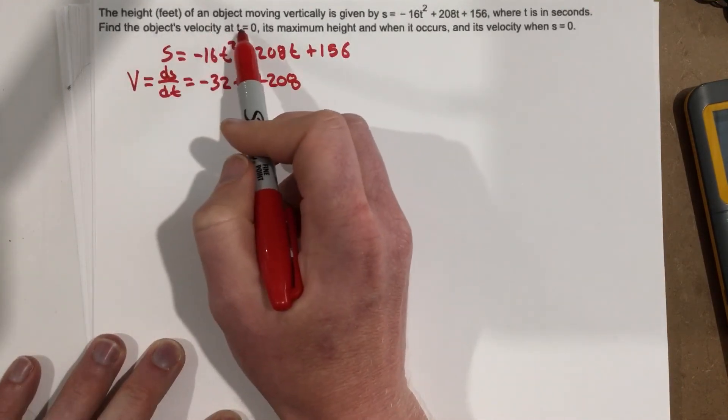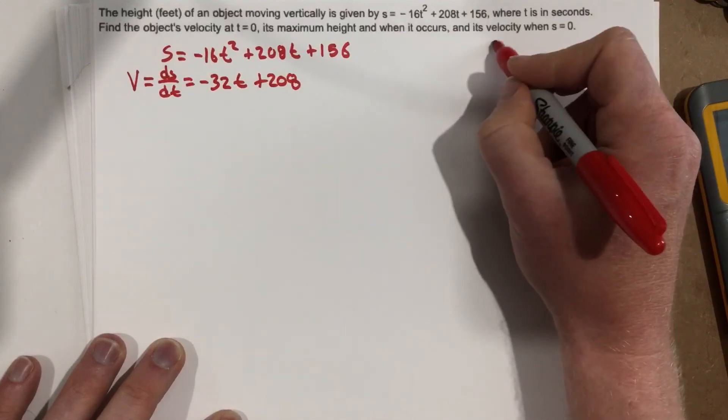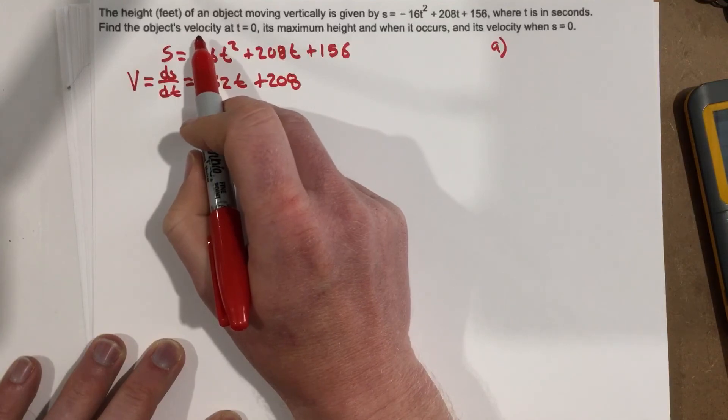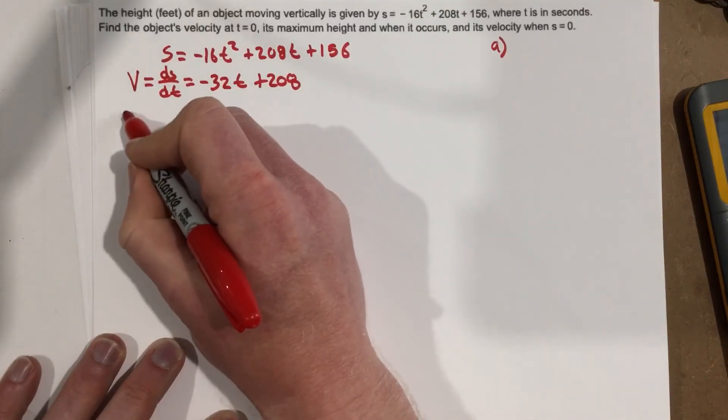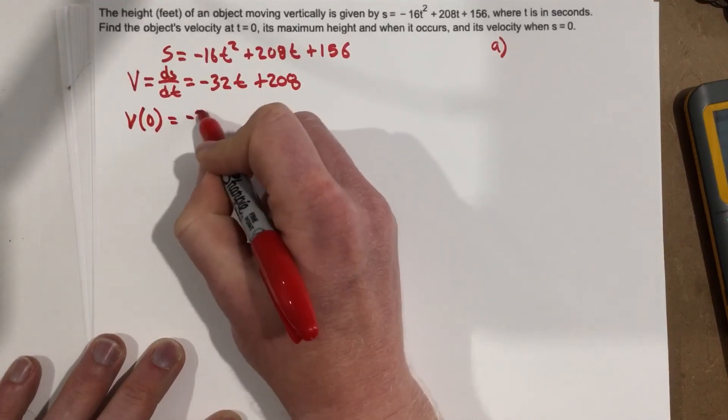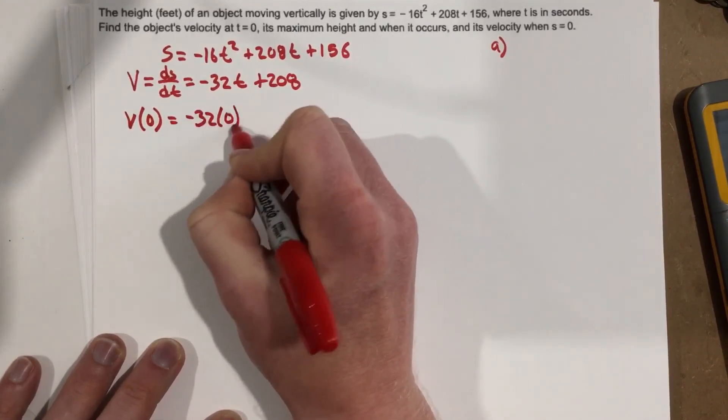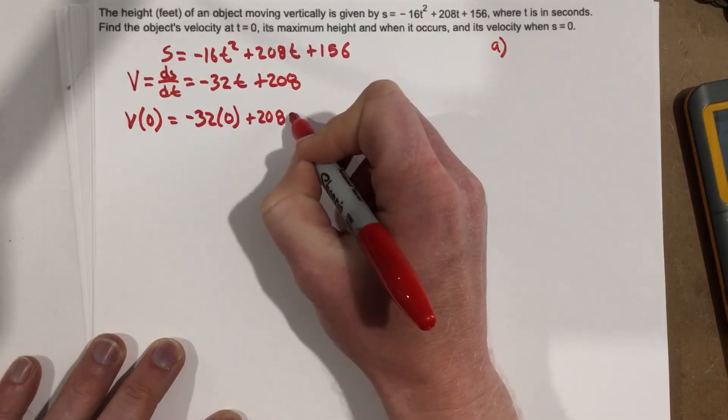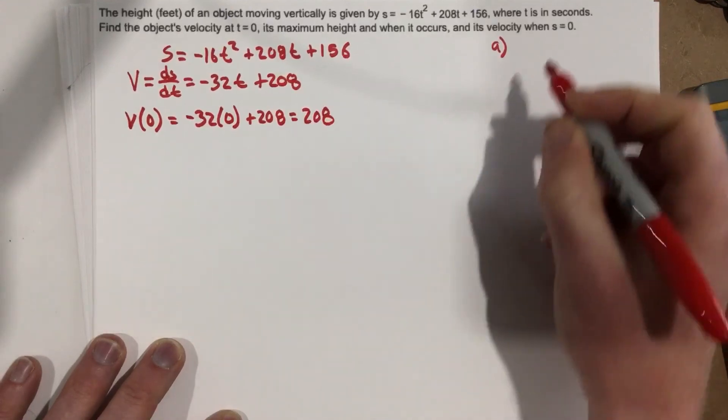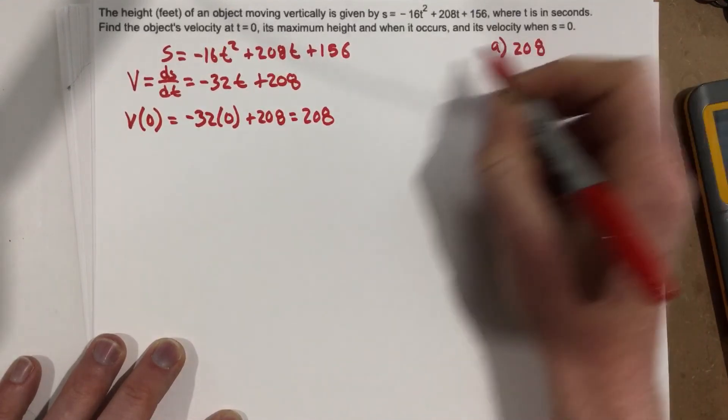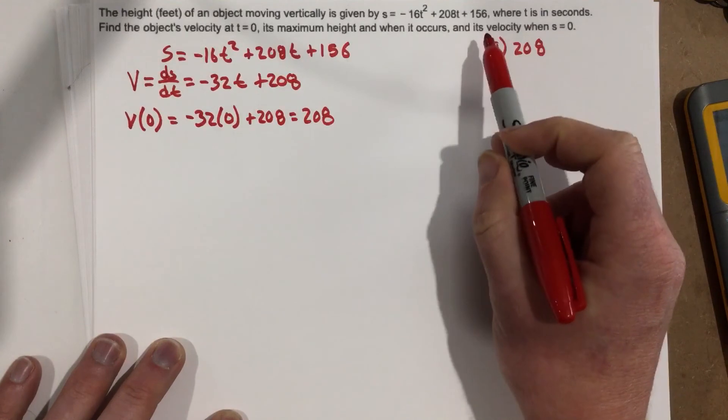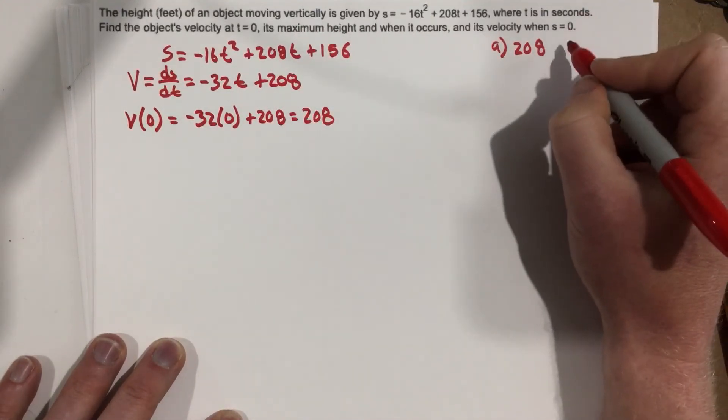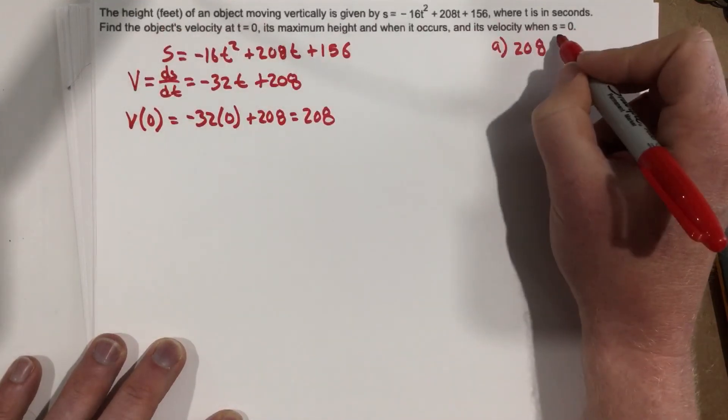Now, I said find the object's velocity at t equals 0. So I'm going to write these out here, maybe part A. Velocity at time equals 0. So we're going to say velocity at 0 equals negative 32 times 0 plus 208, which equals 208. So our velocity here is 208, and they have us, is this feet per second? I think it is. I'm going to go with it. So feet per second.